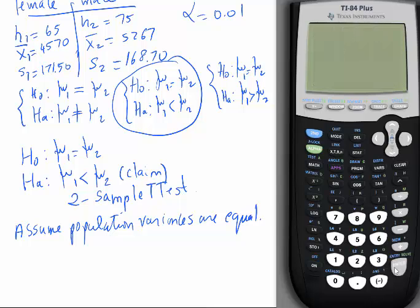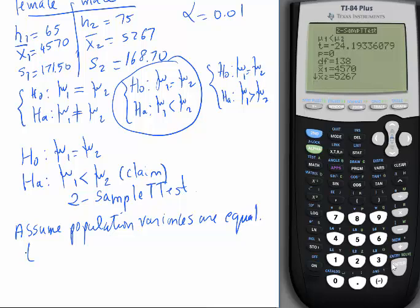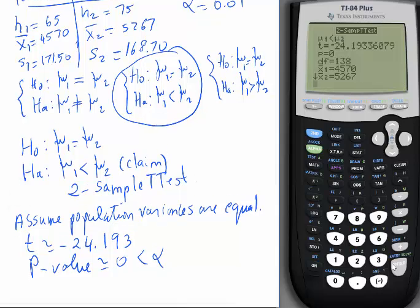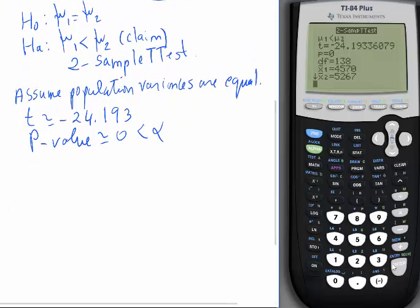And calculate. And here's the test statistic. It's very large from the negative side. Negative 24.193. P value is almost zero, as you can see here, which is definitely less than alpha. And what's your decision when the P value is less than alpha? You reject H0.